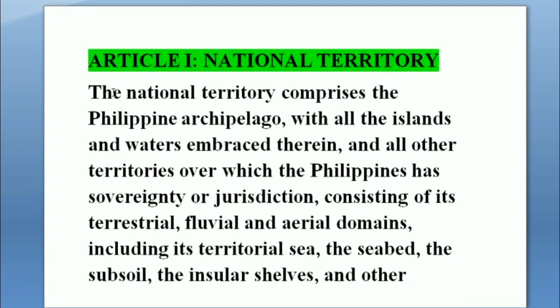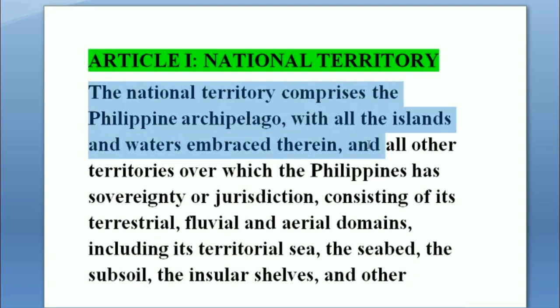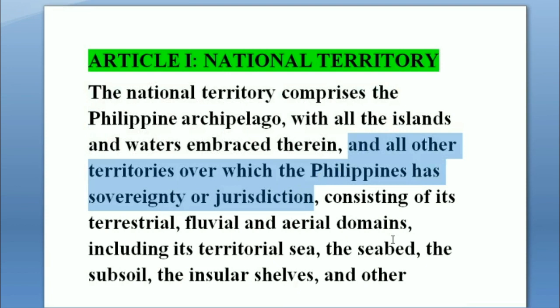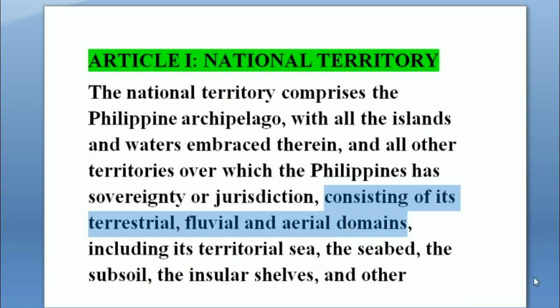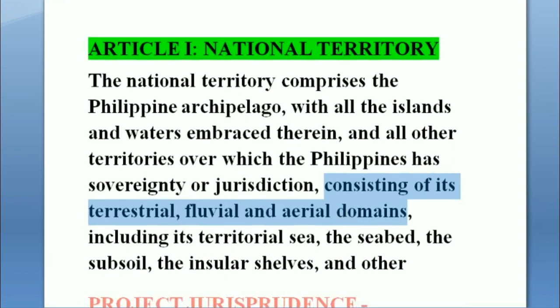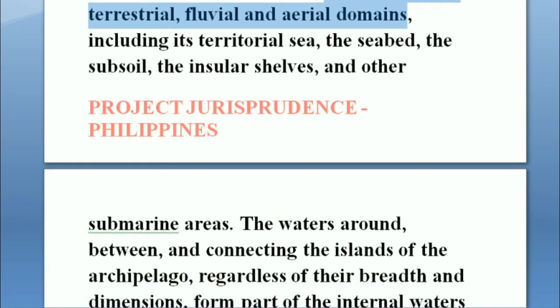Article 1 states: the national territory comprises the Philippine archipelago with all the islands and waters embraced therein, and all other territories over which the Philippines has sovereignty or jurisdiction, consisting of its terrestrial, fluvial, and aerial domains, including its territorial sea, the seabed, the subsoil, the insular shelves, and other submarine areas.